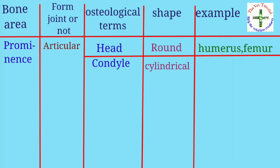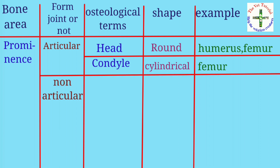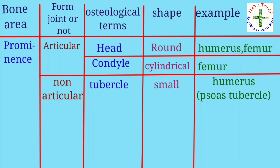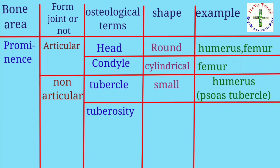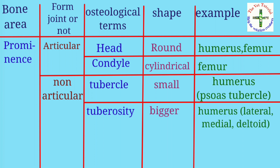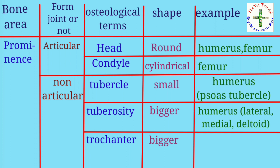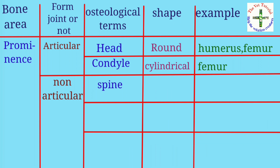Under non-articular prominences: first is tubercle, shape is small, example is humerus — specifically the greater and lesser tubercle. Second is tuberosity, shape is bigger than tubercle, example is humerus — lateral, medial, and deltoid tuberosity. Third is trochanter, shape is bigger than tuberosity, example is femur — greater and lesser trochanter.